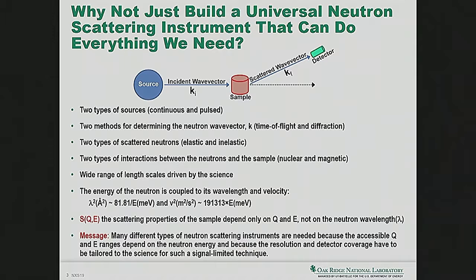Why don't we just build one kind of neutron scattering instrument that measures those two things — the change in the angle and the change in the length of the wave vector? Well there are a lot of reasons for that. We have a lot of different kinds of neutron scattering instruments. We have two types of sources: continuous and pulsed. We have two methods for determining the neutron wave vector: time of flight and diffraction.